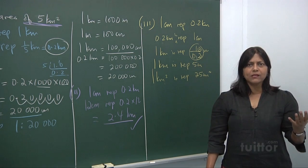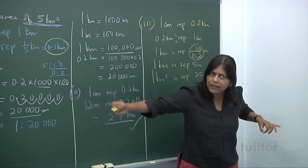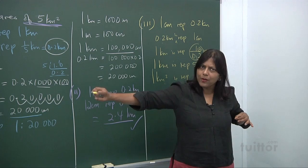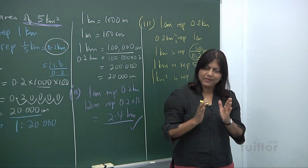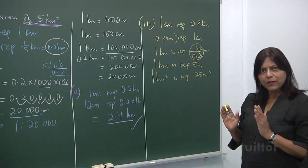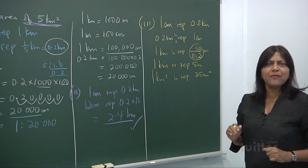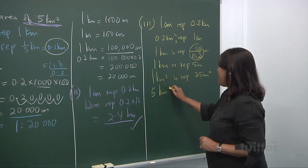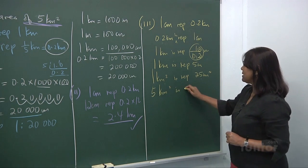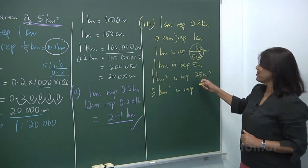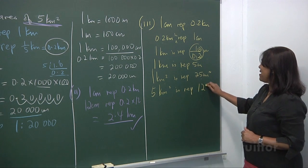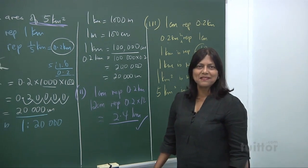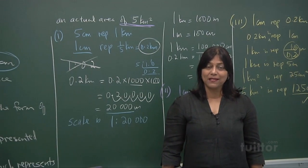So what does 5 kilometer squared represent? You multiply by 5, so you get 25 times 5 is 125 cm squared. Now so much for scales and map reading. This is just a very basic knowledge.